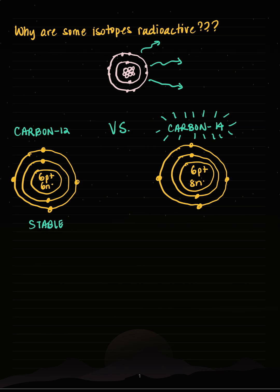Carbon 12 is my stable isotope of carbon. Carbon 14 is my radioactive isotope, or also known as radioisotope. And again, it depends on what's in the nucleus.